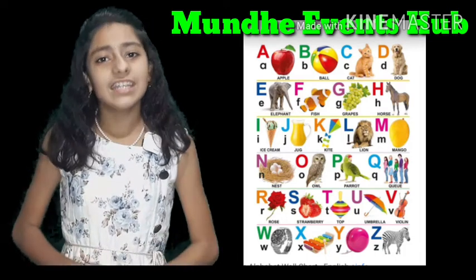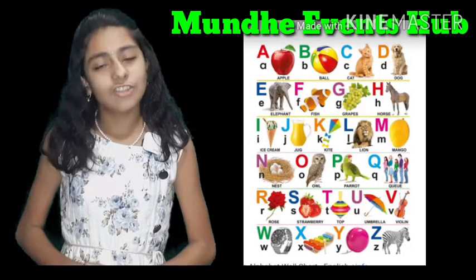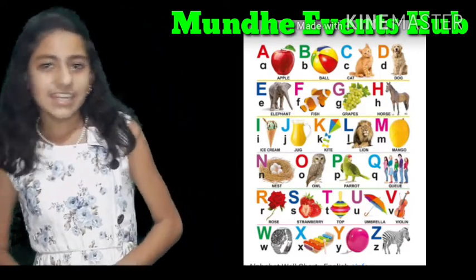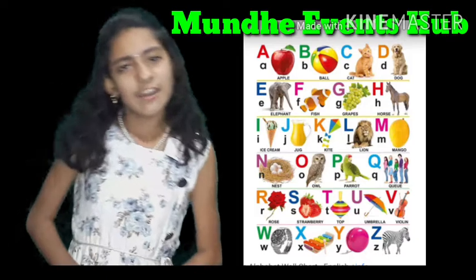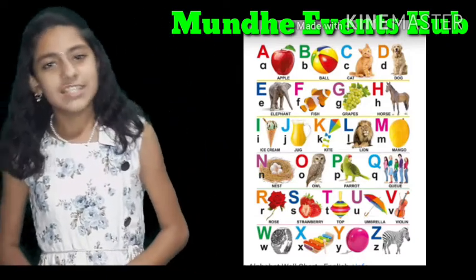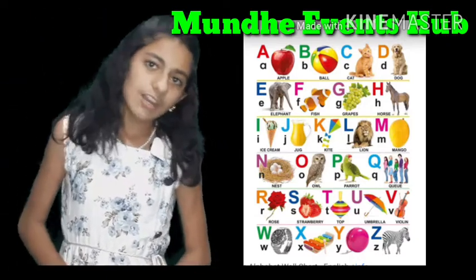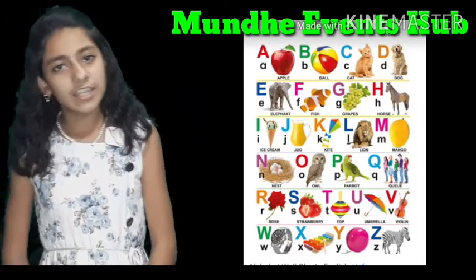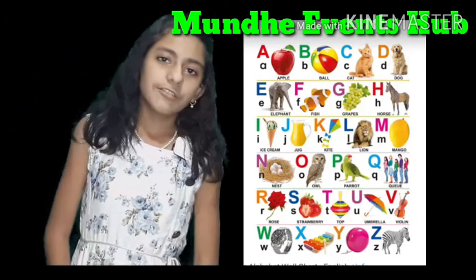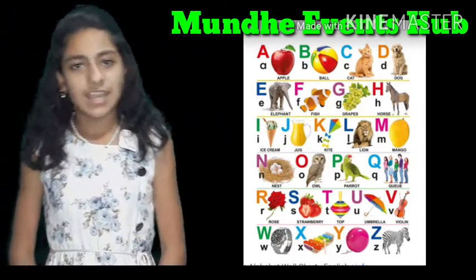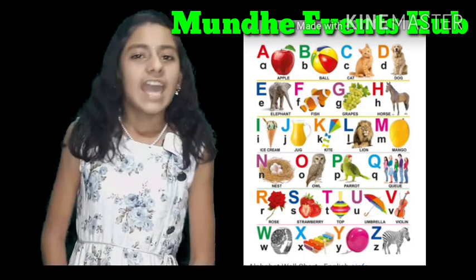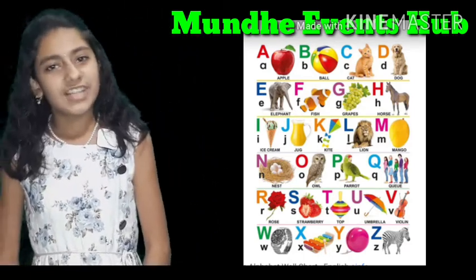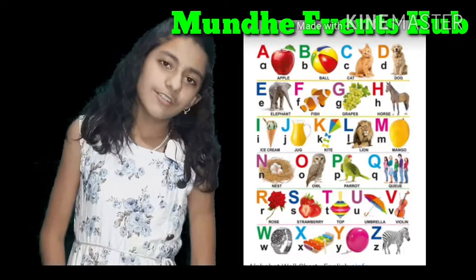Now I sing the song of alphabets. A, B, C, D, E, F, G, H, I, J, K, L, M, N, O, P, Q, R, S, T, U, V, W, X, Y, Z. Now I know my ABCs — butter on the bread. If you don't like, go to bed.